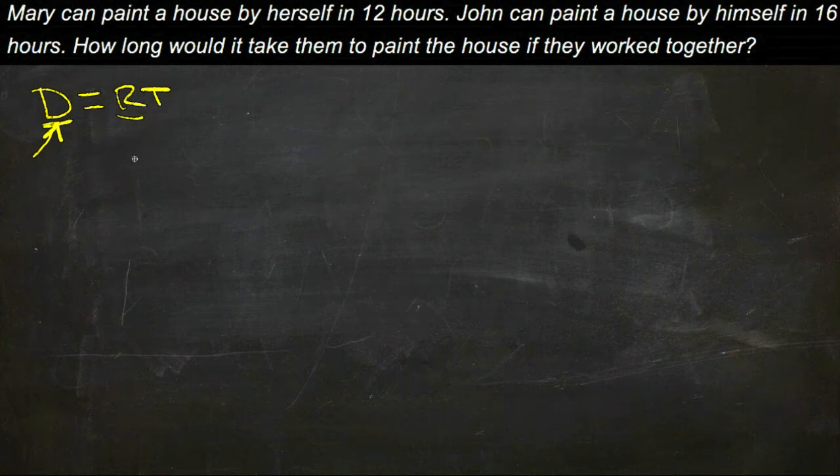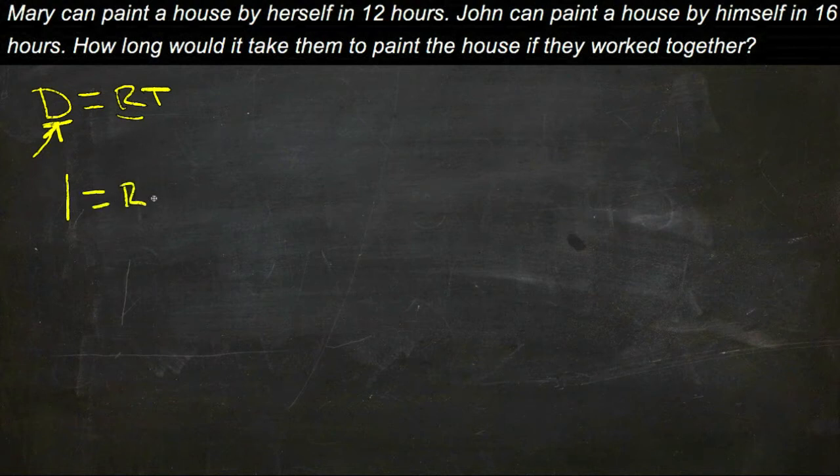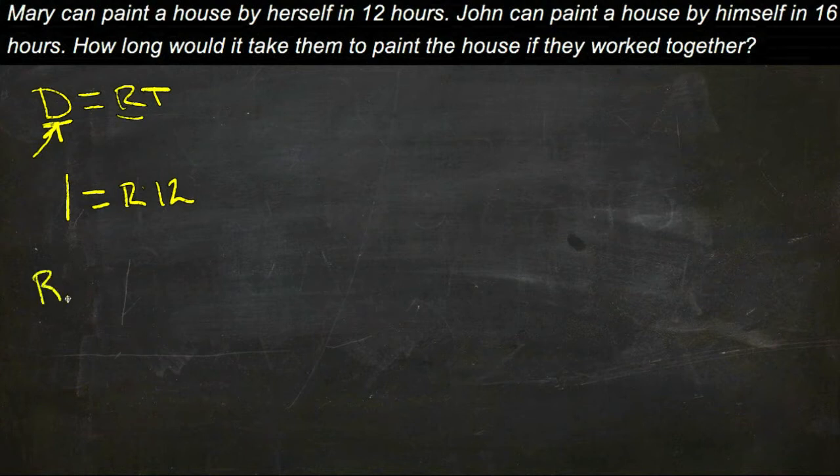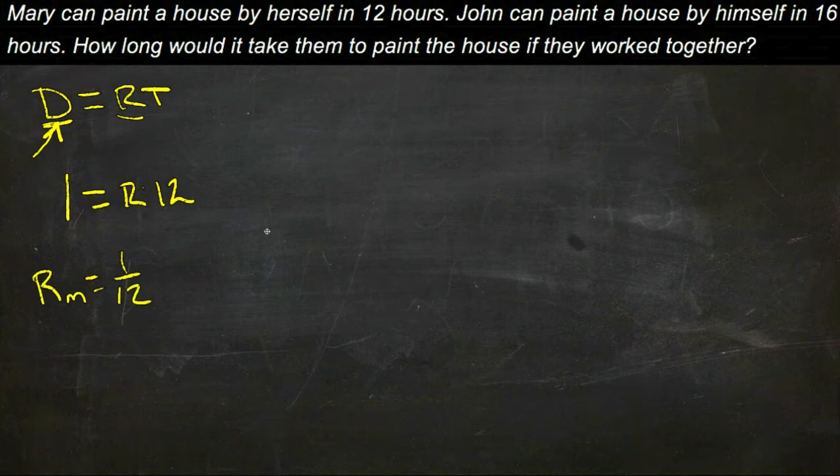So to find Mary's rate, she does one house in some rate times 12 hours. So to find the rate, we need to divide both sides by 12. So Mary's rate, rate Mary, is 1/12, which means that rate John, rate John, is 1/16.